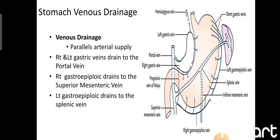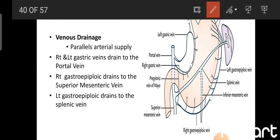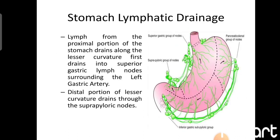The venous drainage corresponds to the arteries. The right and left gastric veins drain into the portal vein. The right gastroepiploic vein drains into the superior mesenteric vein, and the left gastroepiploic vein drains into the splenic vein.